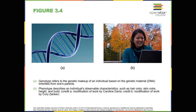When a sperm and egg fuse, their 23 chromosomes pair up and create a zygote with 23 pairs of chromosomes. Therefore, each parent contributes half the genetic information carried by the offspring. The resulting physical characteristics of the offspring, called the phenotype, are determined by the interaction of genetic material supplied by the parents, called the genotype. A person's genotype is the genetic makeup of that individual. Phenotype, on the other hand, refers to the individual's inherited physical characteristics, which are a combination of both genetic and environmental influences.